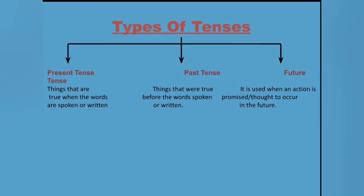Types of tenses. Present tense: things that are true when the words are spoken or written. Past tense: things that were true before the words spoken or written. Future tense: it is used when an action is promised or thought to occur in the future.